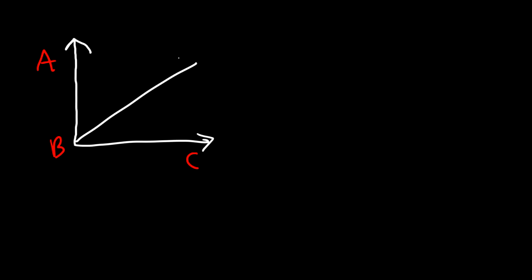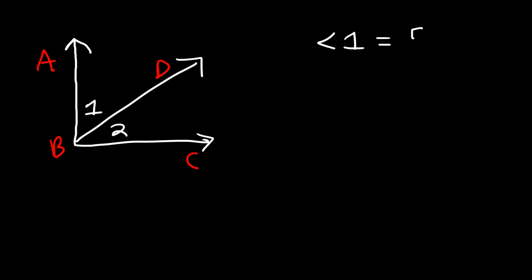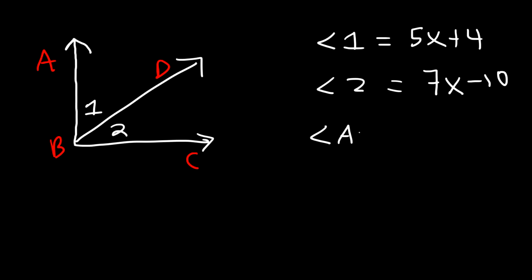Now let's work on an example problem. Let's say angle ABC is a right angle divided into two angles — angle 1 (angle ABD) and angle 2 (angle DBC). Angle 1 has a measure of 5x plus 4, and angle 2 is equal to 7x minus 10. Since angle ABC is a right angle, it equals 90 degrees. Find the measure of angle 1.